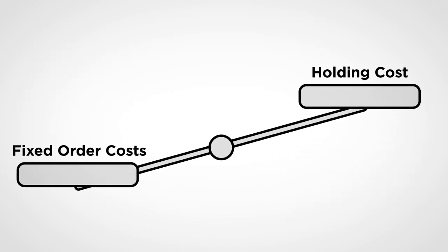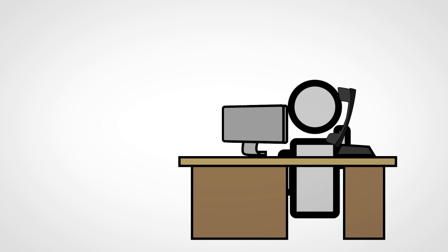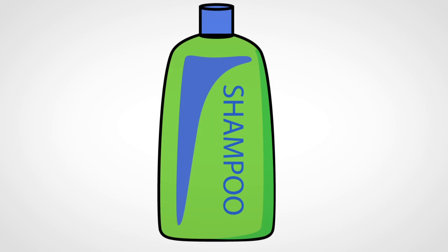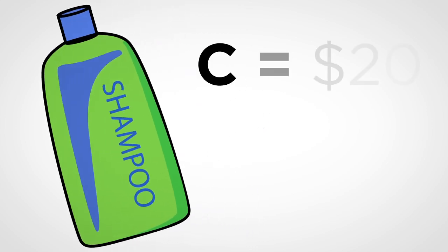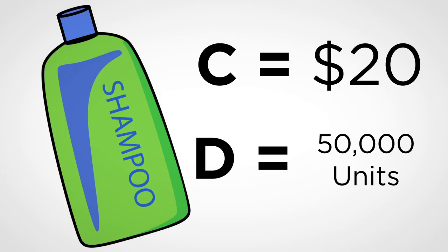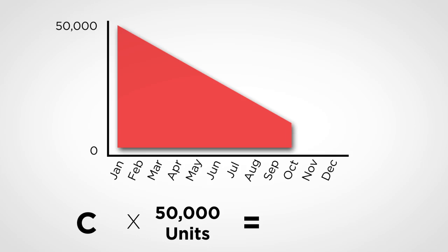Given this, your goal is to optimally trade off fixed order costs and holding costs. We also assume that the lead time — the time between placing an order and receiving the shipment — is zero. To understand how the order policy impacts these costs, let's consider how you would manage the inventory of a particular brand of shampoo. Let's say each unit of shampoo costs $20 and the annual demand for the shampoo is 50,000 units. Two natural but extreme policies come to mind. In the first extreme policy, you can order all 50,000 units of shampoo at the beginning of the year and sell them over the course of the year as demand arrives.